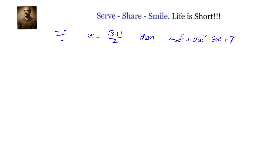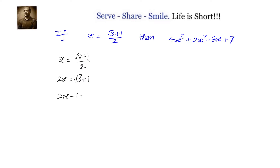Given that x equals the square root of 3 plus 1, divided by 2. We can cross multiply and write it as 2x equals root 3 plus 1, or equivalently, 2x minus 1 equals the square root of 3.